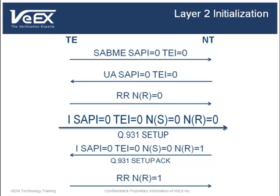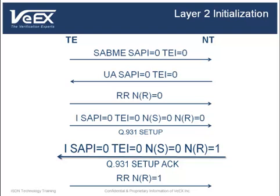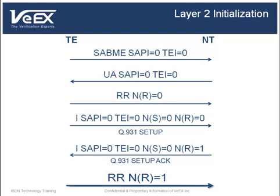NS and NR show that no frames have been received yet. The NT responds with an I-Frame with the same SAPI and TEI to acknowledge the Q931 setup message. NR also acknowledges that one frame was previously received by the NT. The TE sends a receive ready frame to indicate that it can begin receiving frames. To disconnect after multiple frames have been established, the disconnect frame can be sent. If multiple frames cannot be established, the disconnected mode frame is sent. And if frames cannot be recovered by retransmission, the frame reject message will be sent.